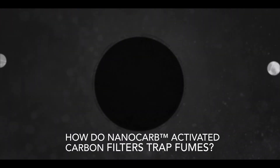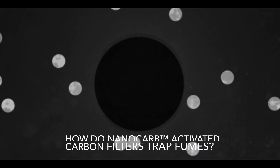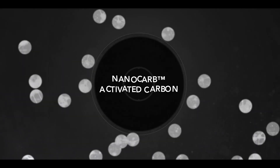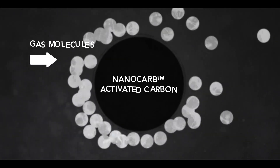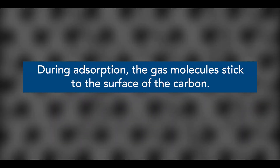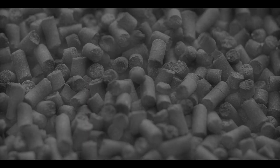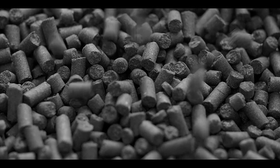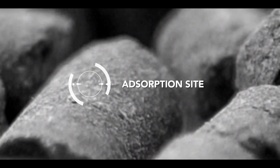How do nano-carb activated carbon filters trap fumes? Carbon filters trap gaseous pollutants through the process of adsorption. During adsorption, the gas molecules stick to the surface of the carbon. Activated carbon has a larger surface area known as adsorption sites, allowing it to absorb more contaminants.